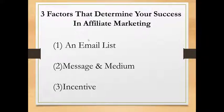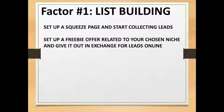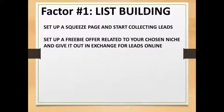Number three is incentive — these are valuable bonuses you offer your subscribers so they can buy affiliate offers through your link and not from other marketers. The number one factor to becoming a successful affiliate marketer is list building. List building has a conventional way, which is to set up a squeeze page and start collecting leads.